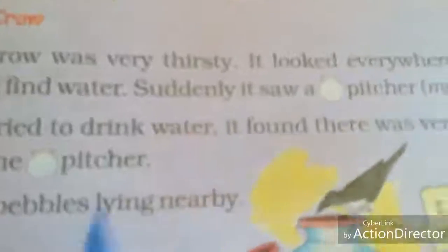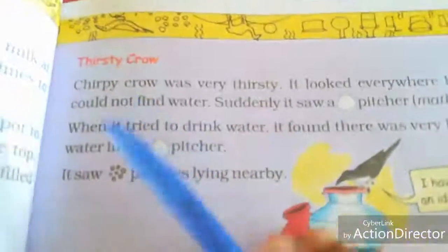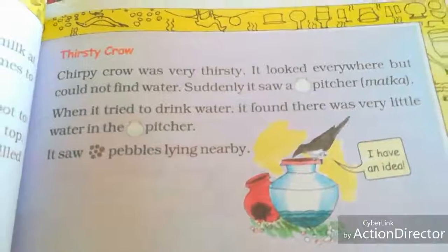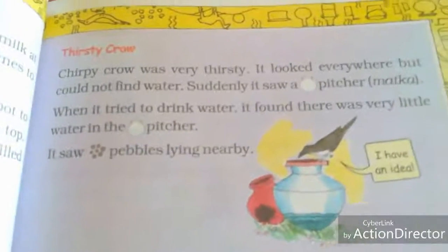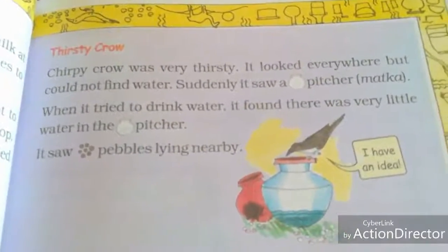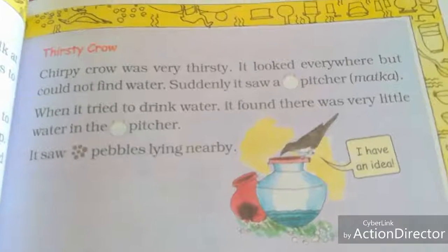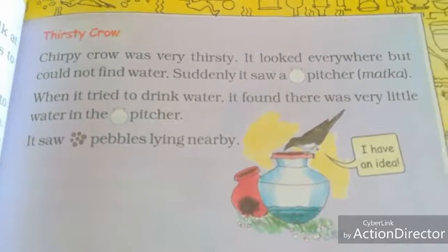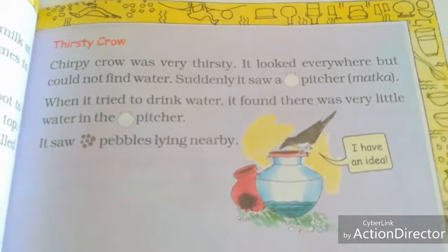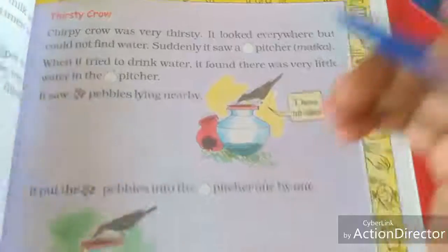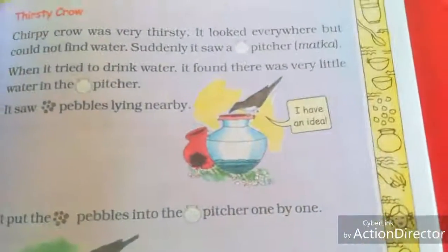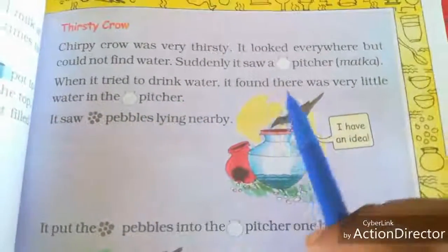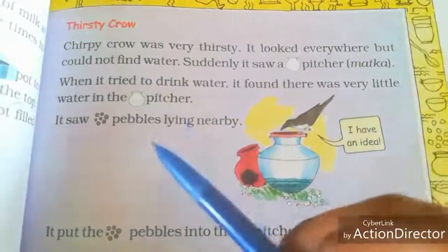Thirsty crow — I think you remember this story. The crow called Chirpi was very thirsty. It looked everywhere but could not find water. Suddenly it saw a picture — in Hindi they call it 'matka' — a pot. When it tried to drink water, it found there was very little water in the pot.